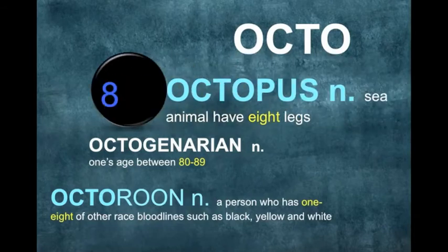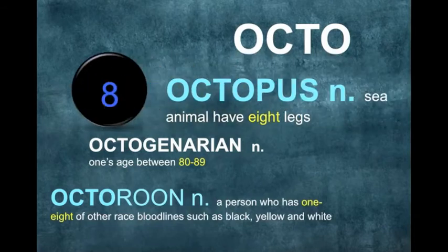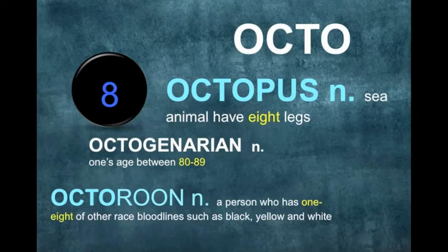Number eight: octo is a root referring to eight. Octopus is a sea animal which has eight legs. Octogenarian is a person whose age is between 80 and 89. Octo also refers to a hybrid person who has one eighth of another race's bloodline, such as black, yellow, and white.